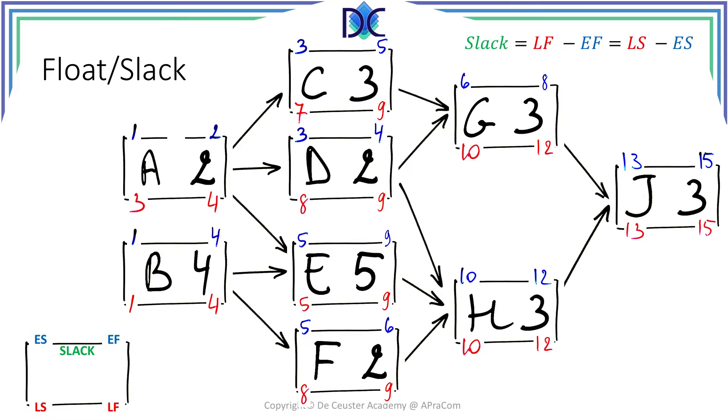For activity A we can calculate the slack by subtracting 1 from 3 or 2 from 4, so we find the slack equal to 2. For activity B we see that early start and early finish relative to late start and late finish are the same, so their difference is 0 and activity B has a slack equal to 0.